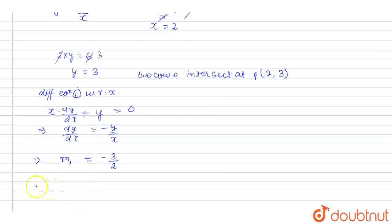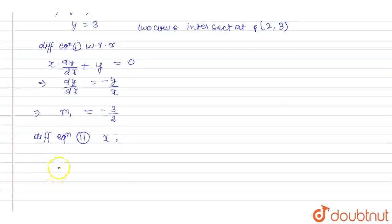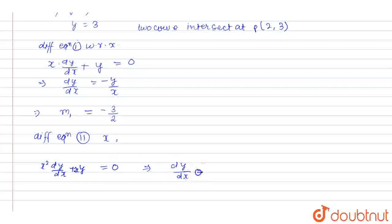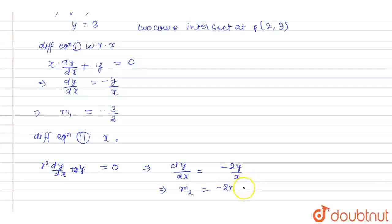Again, differentiating equation two, x²y = 12, with respect to x: x²(dy/dx) + 2xy = 0, so dy/dx = −2y/x. Let this be slope m2. Putting in x = 2 and y = 3: m2 = −2(3)/2 = −3.